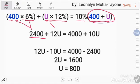That is 2,400. Multiply this. So, 12U. Multiply this. So 4,000. Then this 10U.